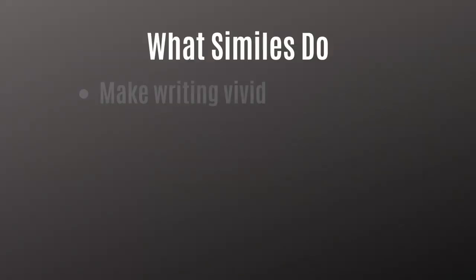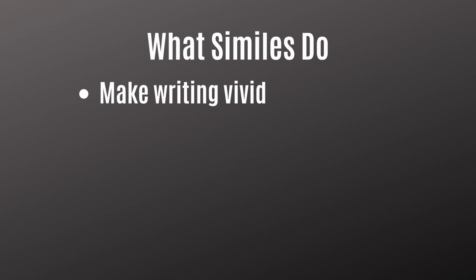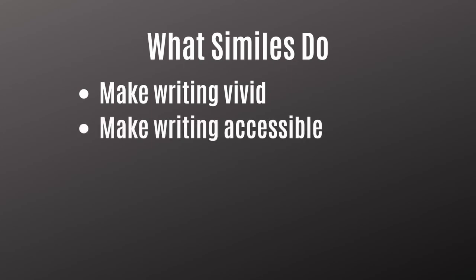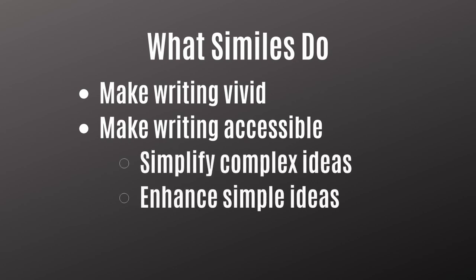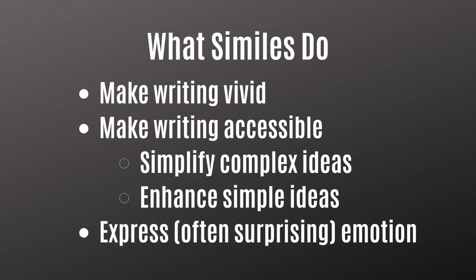The first thing similes do is make your writing vivid. Anytime you take two different ideas and compare them, you draw fresh perspectives on those ideas. The second thing similes do is make your writing accessible by simplifying complex ideas or enhancing our understanding of simpler ones. And the third thing a simile does is express emotions — oftentimes surprising emotions. You can change the mood in a scene, or paint a setting, object, or person in a certain emotional light, if you use an effective simile.